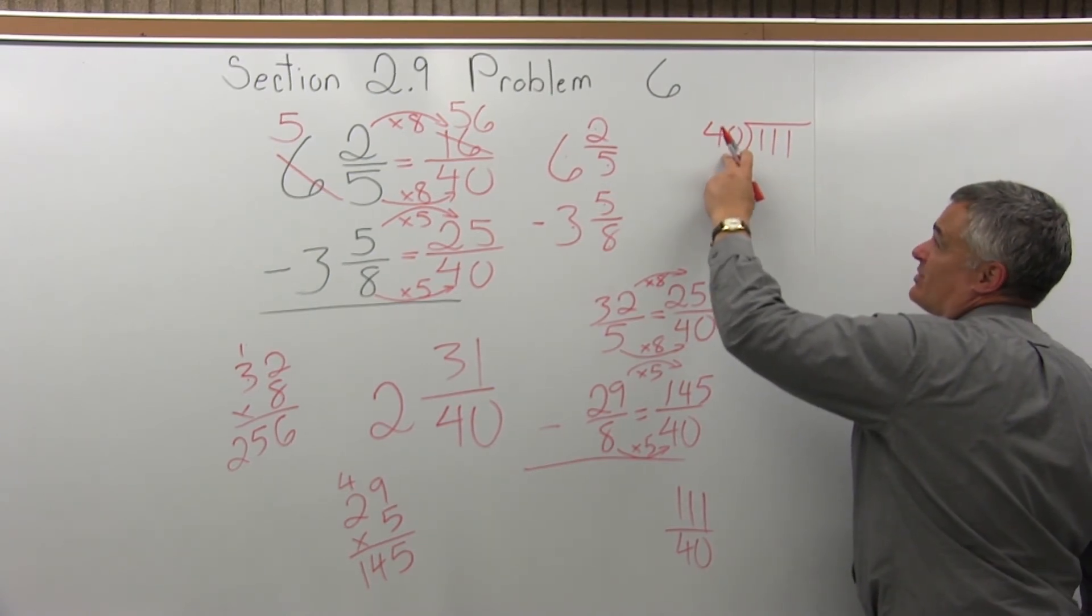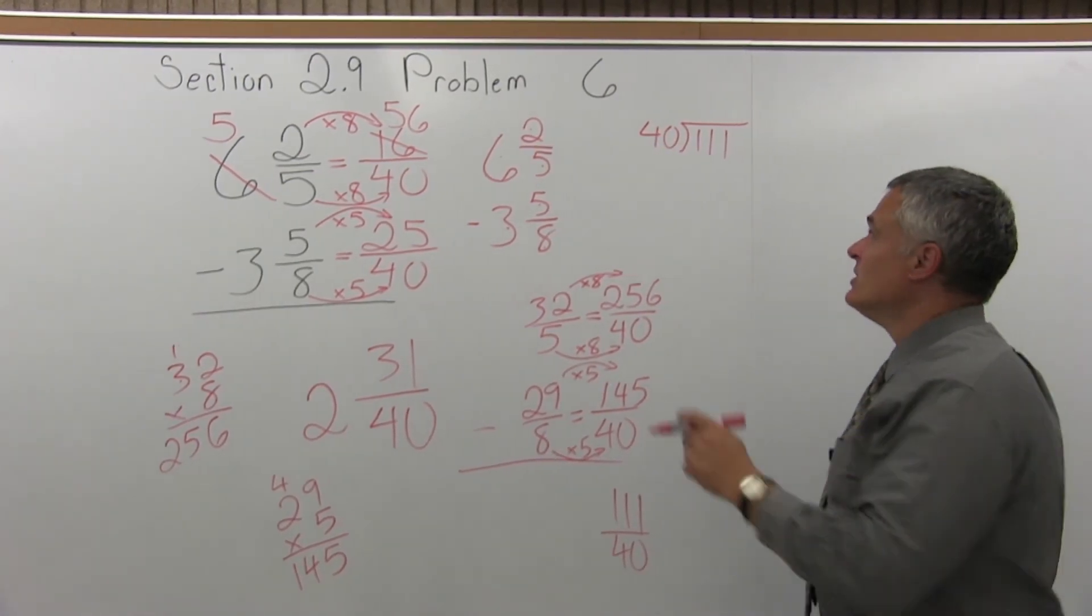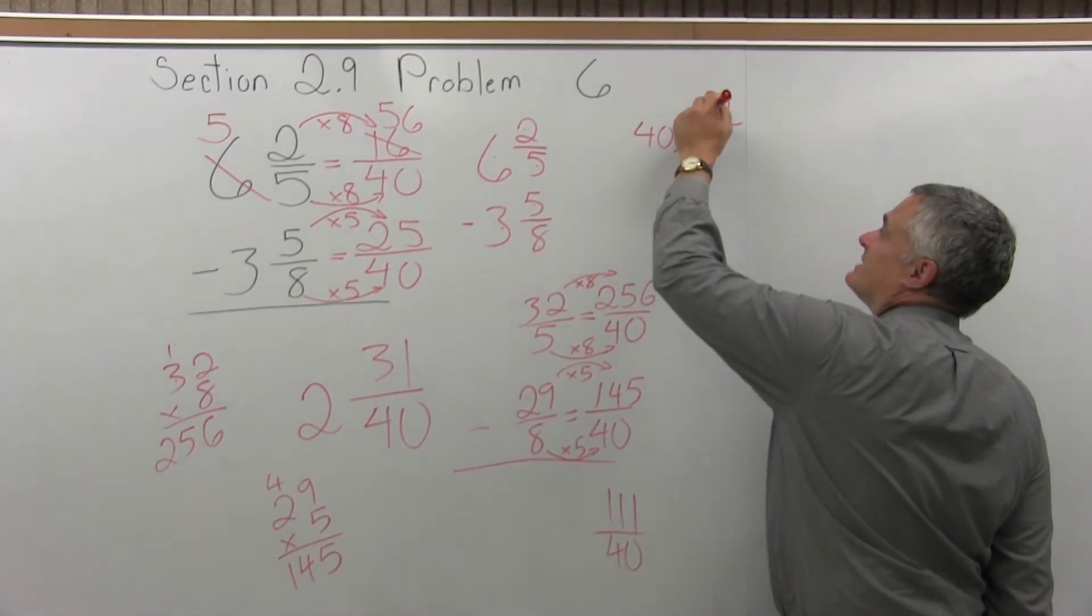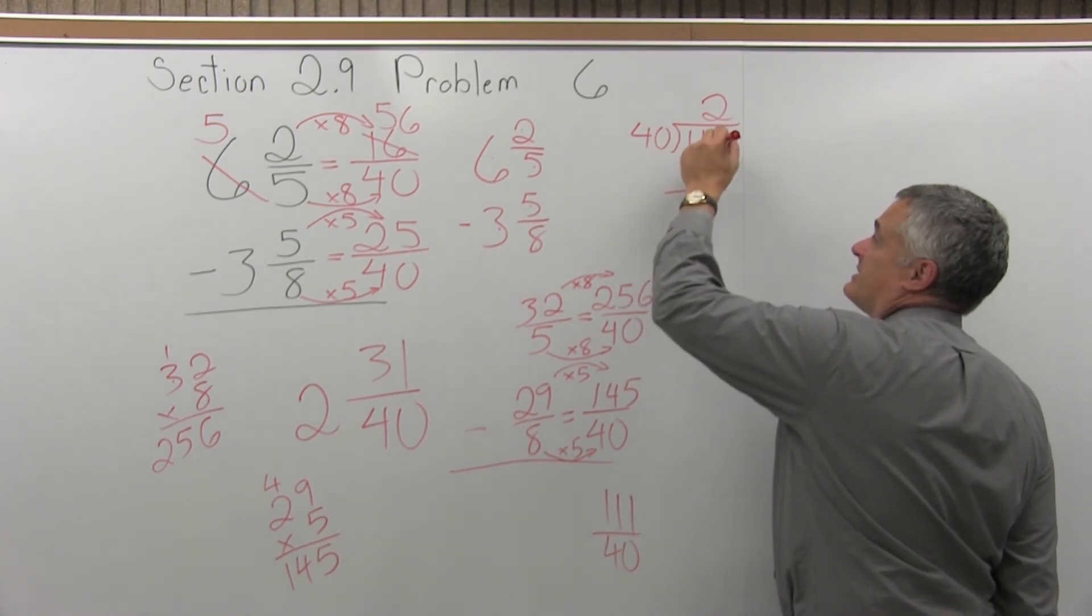1 times 40 is 40, 2 times 40 is 80, 3 times 40 is 120. 3 times 40 is too big, so 2 times 40 is as big as I can get. 2 times 40 is 80. Now subtract 111 minus 80.